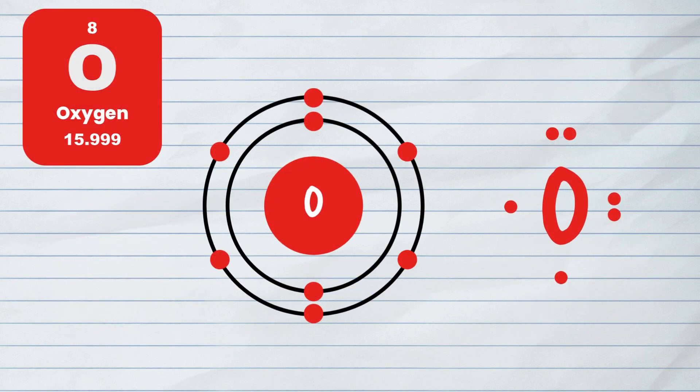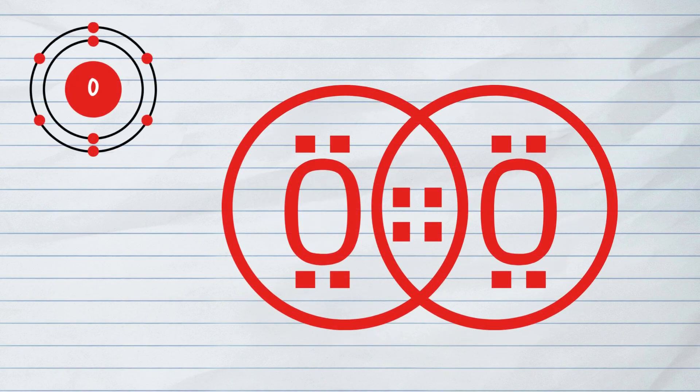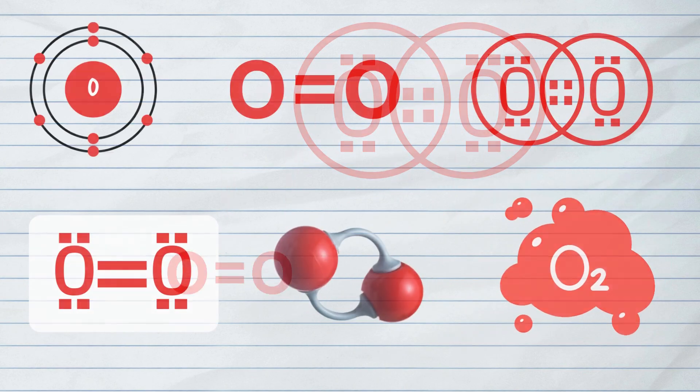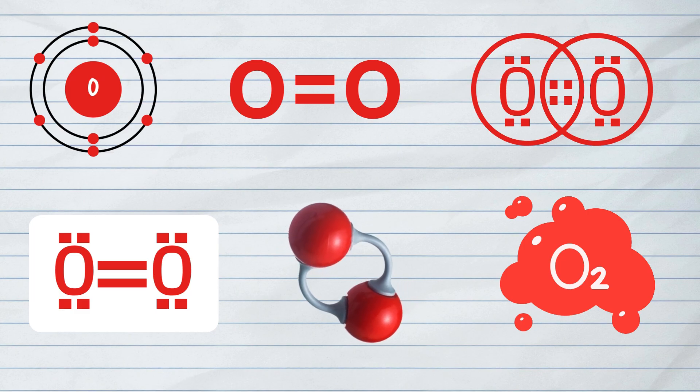Oxygen has six valence electrons, and two oxygen atoms will share two of their six valence electrons to form a double covalent bond, thus forming a stable O2 molecule.